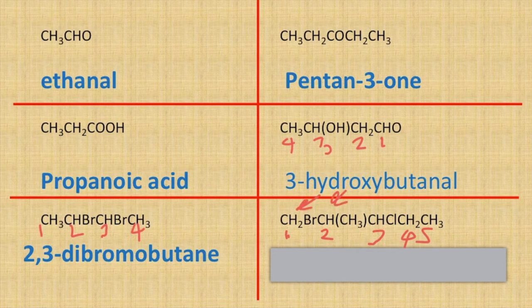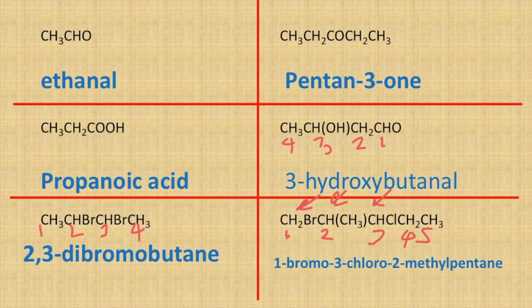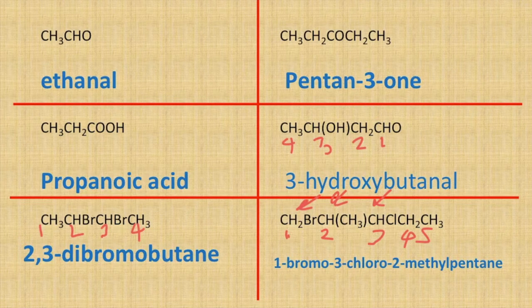And off carbon three I've got a chloro group. So if we put that all together it becomes 1-bromo-3-chloro-2-methylpentane. Remember we have to put the groups in alphabetical order.